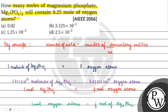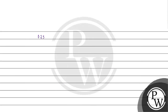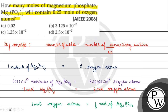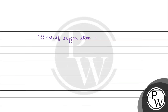We are asked for 0.25 moles of oxygen atoms. So the number of moles of magnesium phosphate will be 1/8 × 0.25, which gives 3.125 × 10⁻² moles of magnesium phosphate.